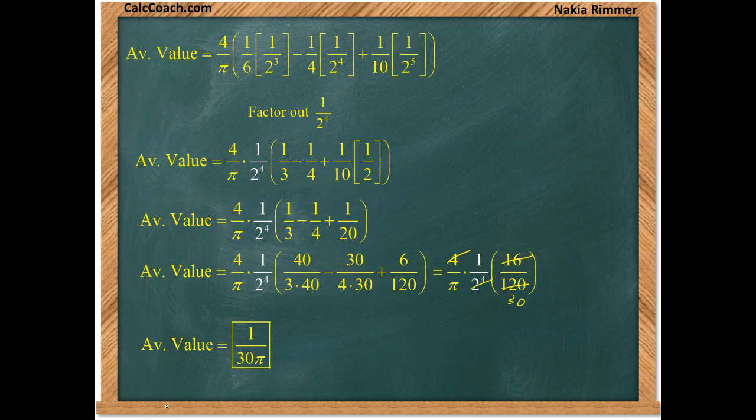If you have root two and that's raised to the sixth, that's two to the half raised to the sixth. You can multiply these exponents and that's two cubed. So root two to the sixth is two cubed.